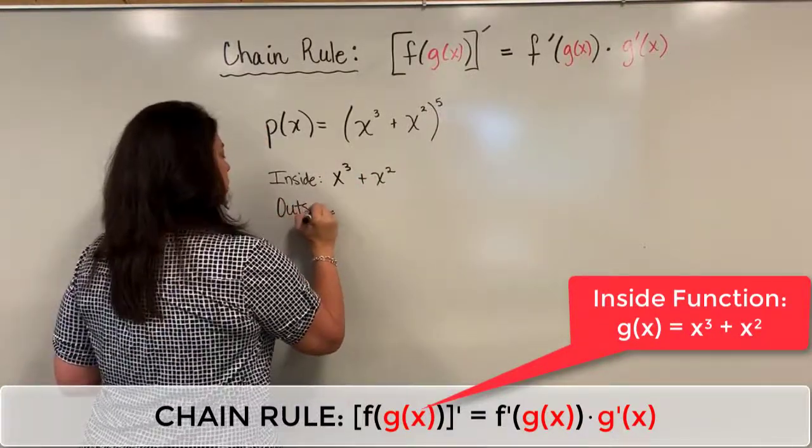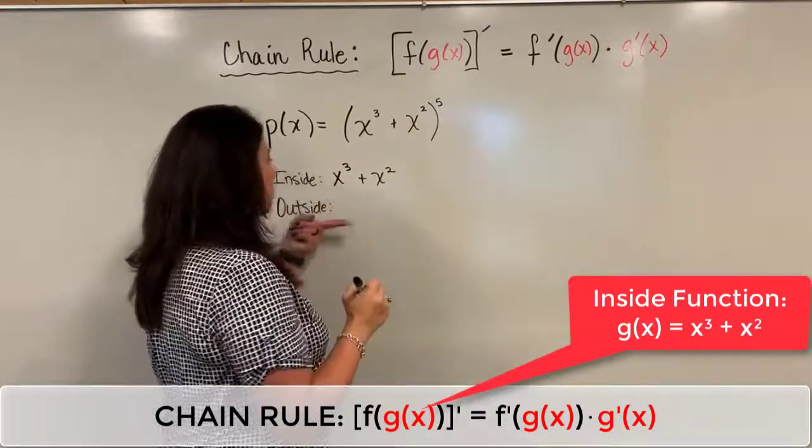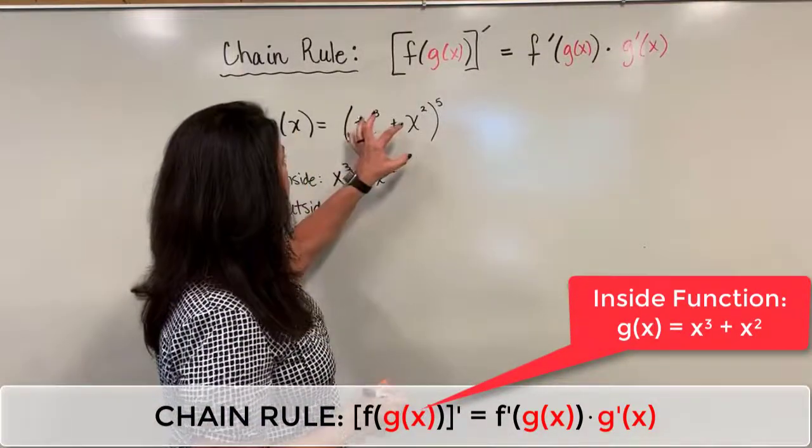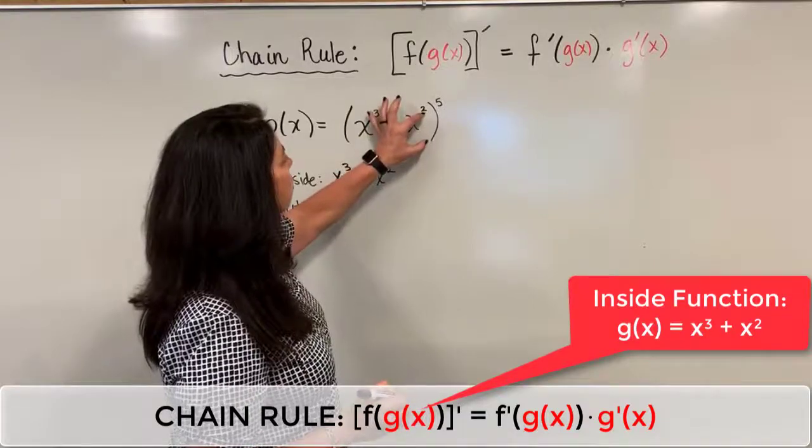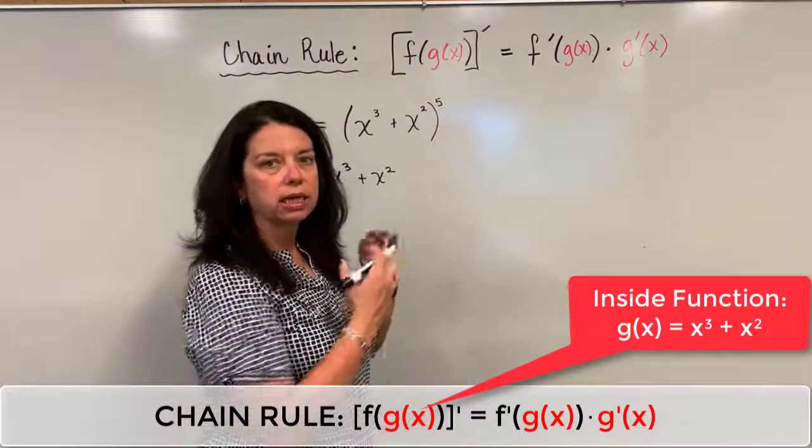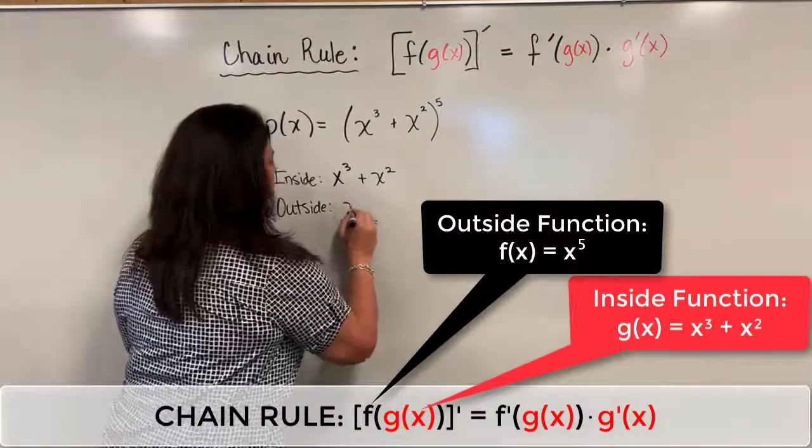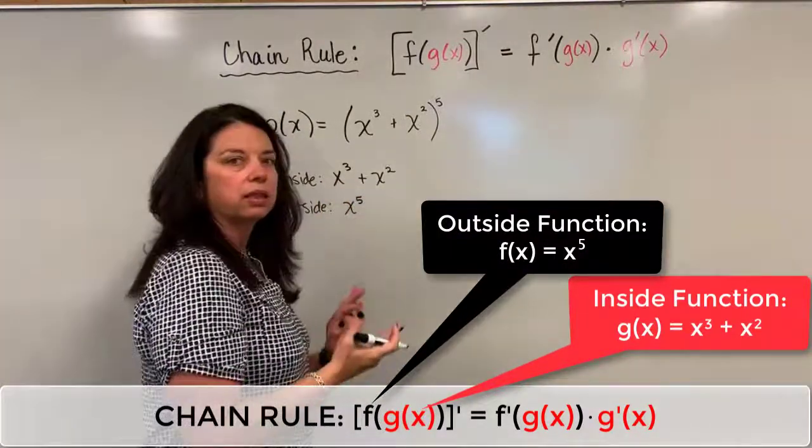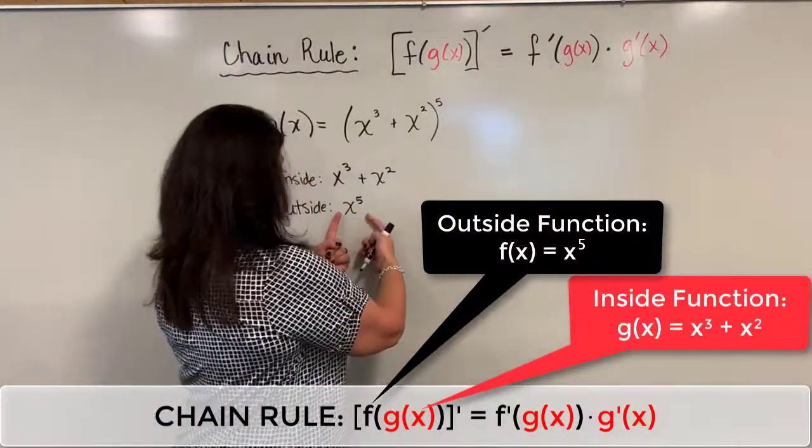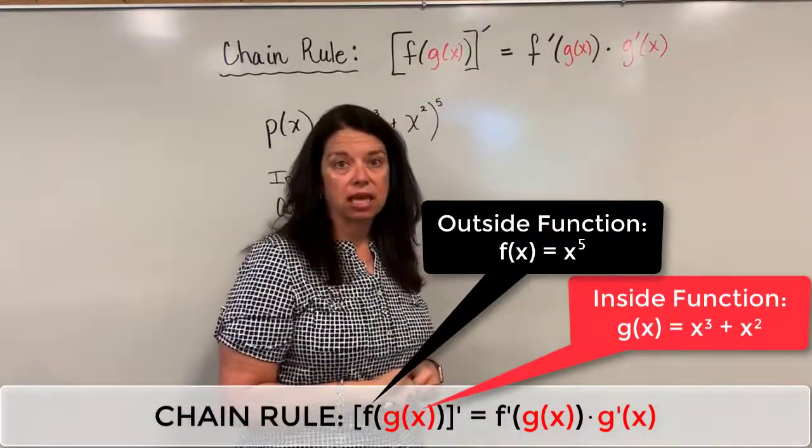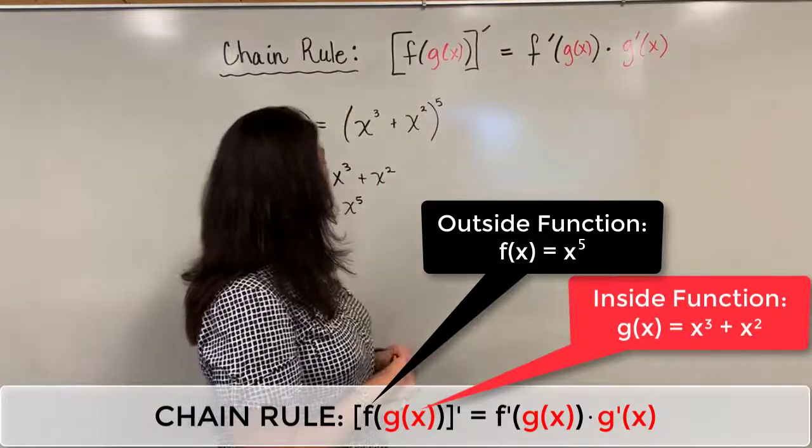My outside function—it's important by the way to write these down just so you can visually see them—the outside function is the thing that I'm doing outside of those parentheses, and in here I'm taking that quantity to the fifth power. So I have something like an x to the fifth. This isn't my actual function because I have a more complicated x on the inside there of those parentheses, but that quantity has been taken to the fifth.